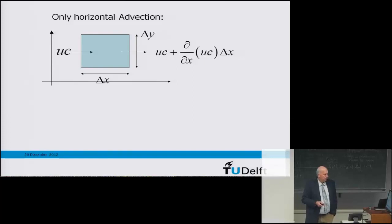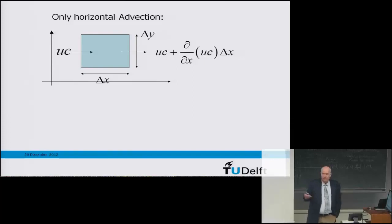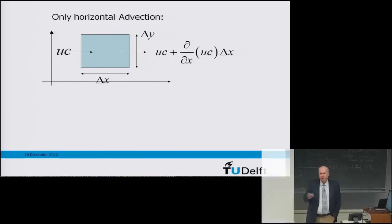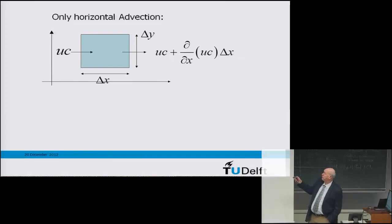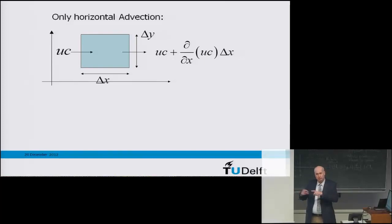At the right side, material is leaving as well, and there can be a gradient in the term uc. At the right side, what is leaving is uc plus the gradient of uc times delta x — the total transport at the right side. If there's no gradient, so no difference in the product of u times c, then the d/dx of uc is zero, meaning the same amount of particles come in on the left and leave on the right. There's no net difference in the number of particles in the control volume.